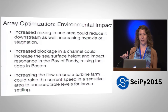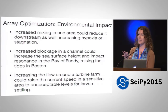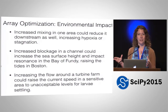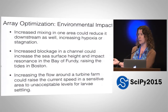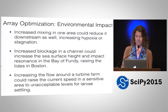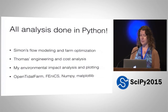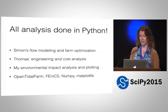Thinking about these sorts of studies are some of the things we're considering. Another thing: increasing flow in a certain area that's sensitive for larvae would be bad too. So maybe you'd want to optimize so that spatially a certain area doesn't exceed some increased flow, while maybe other places it's okay to increase or decrease the flow. All of our analysis is done in Python — Simon's flow modeling and farm optimization, Thomas's engineering and cost analysis, and my environmental impact analysis and plotting.